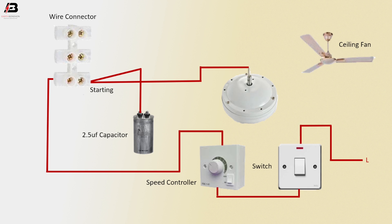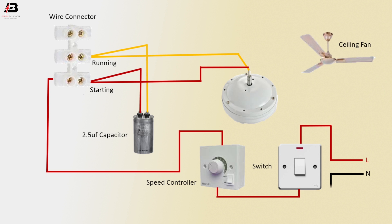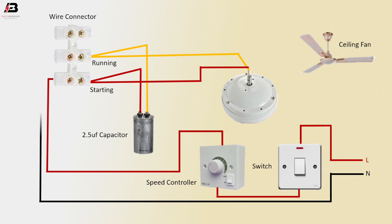Starting coil. Phase connection outgoing from wire connector to ceiling fan. Phase connection outgoing from wire connector to running coil with capacitor. Neutral connection connected to wire connector.